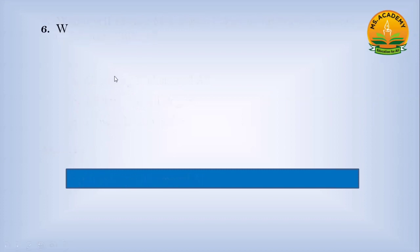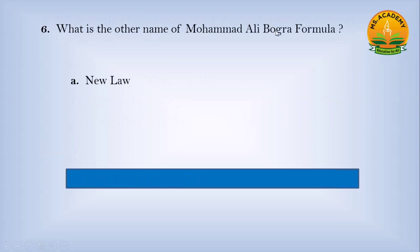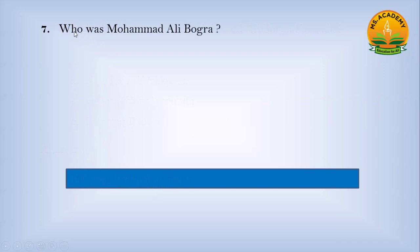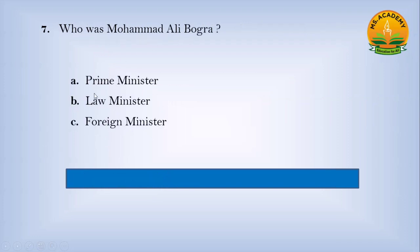What is the other name of the Muhammad Ali Bogra Formula? Option A, New Love Pakistan; Option B, Constitutional Formula; Option C, Pakistan Report. Answer: B — Constitutional Formula. Who was Muhammad Ali Bogra? Option A, Prime Minister; Option B, Law Minister; Option C, Foreign Minister. Answer: A — Prime Minister.